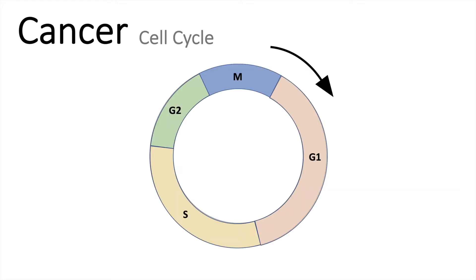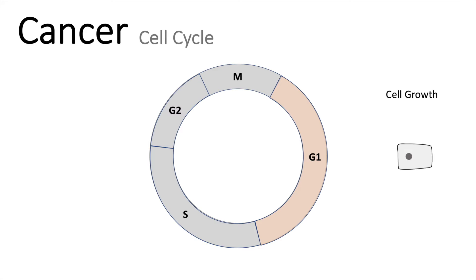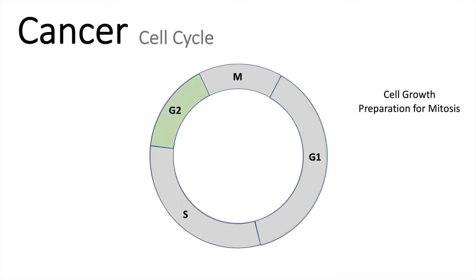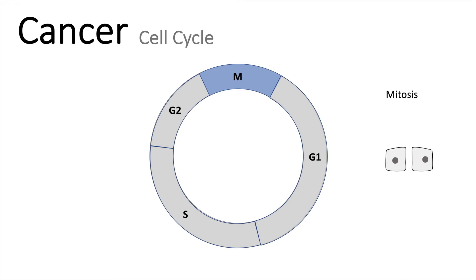Here we have a schematic view on the cell cycle. We start with cell growth which happens in the G1 phase — the cell will usually just grow there. Then in the S phase the cell will replicate, meaning it will make a second copy of the DNA. In the G2 phase, which happens closely before the actual division, we have cell growth again — the cell will grow even more and prepare for mitosis. And the M phase is the actual mitosis where the cells will divide.